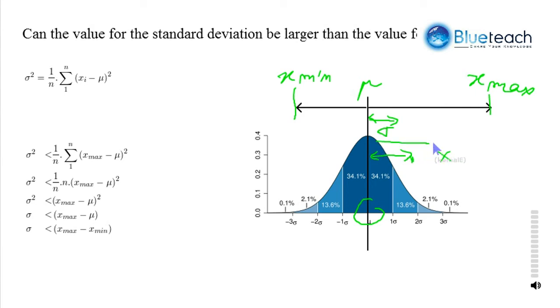So, every xi minus mu is lower than x max minus mu.